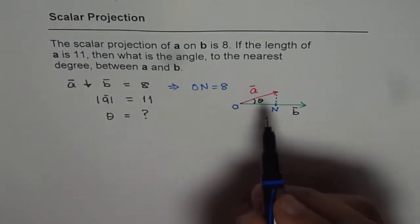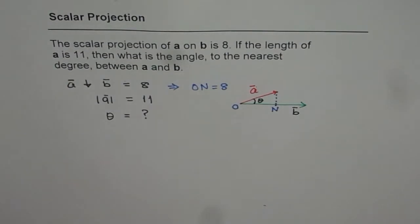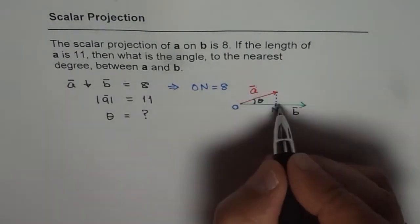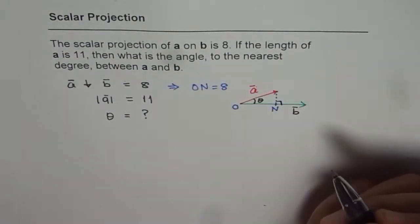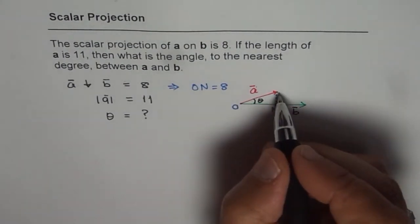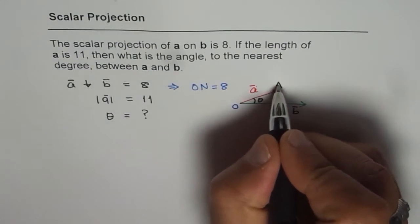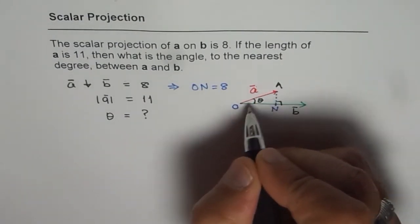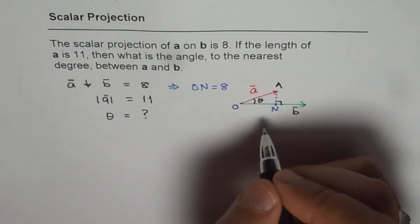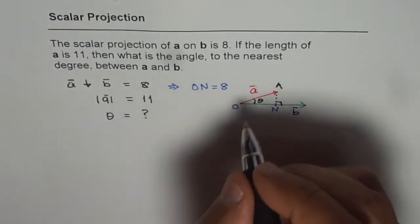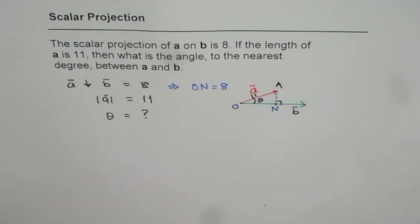Now we need to find the angle theta. Now as you can see, this is a right triangle. Now in this right triangle, the side shown by the red line, let us say this point is A, vector is O, OA or A whose magnitude is 11. So this side is 11 for us.